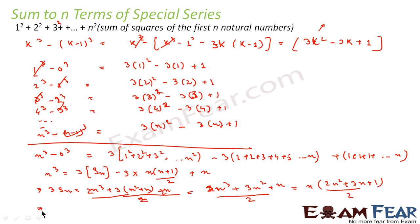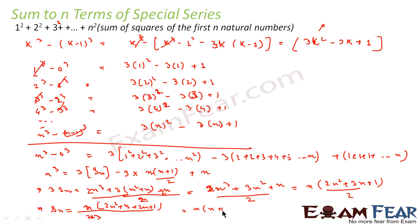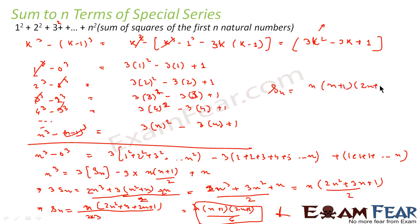Dividing both sides by 3: Sn = (1/6)·n·(2n² + 3n + 1). Factorizing 2n² + 3n + 1 = (2n + 1)(n + 1). Therefore Sn = n(n+1)(2n+1)/6.